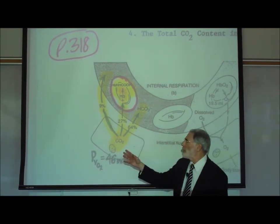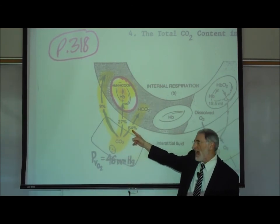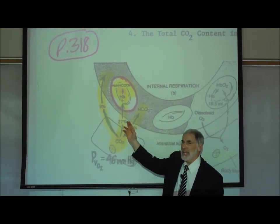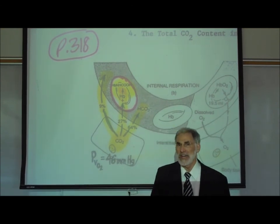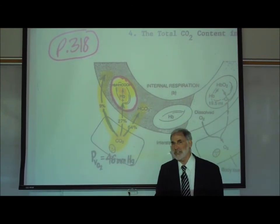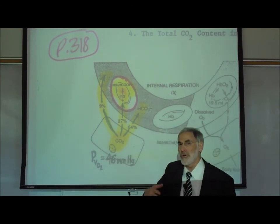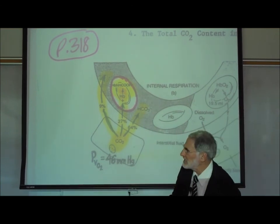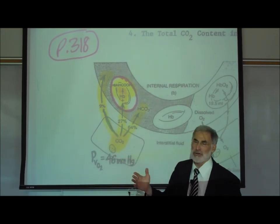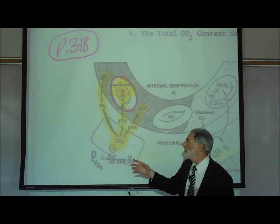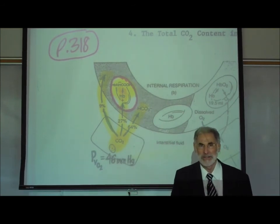But the majority — more than half — of the carbon dioxide that enters the bloodstream reacts with water, forming carbonic acid, which then dissociates and forms a bicarbonate ion. Therefore, we say that most of the carbon dioxide being carried or transported in the bloodstream is in the form of bicarbonate ion.